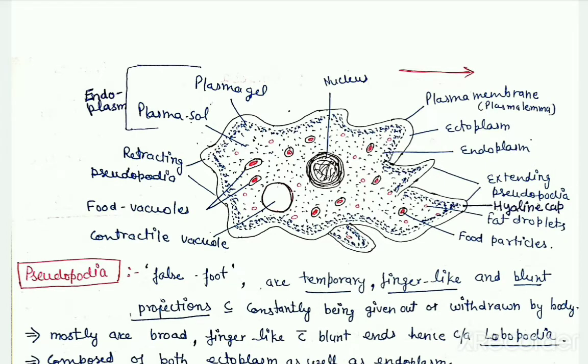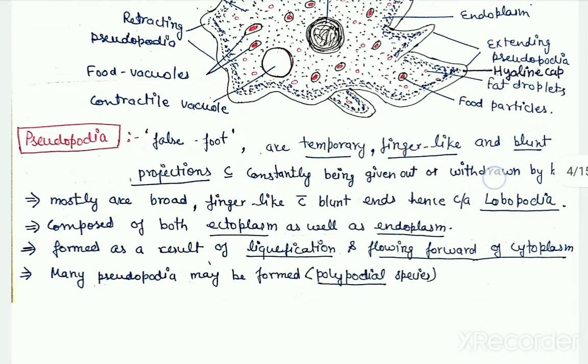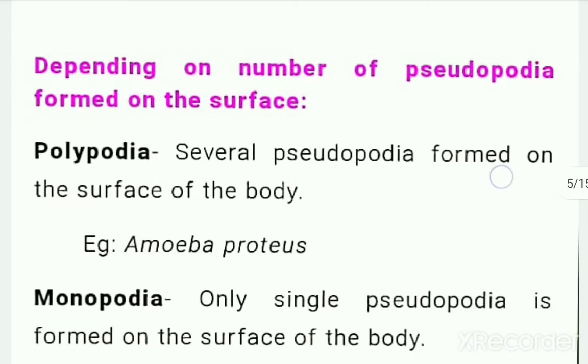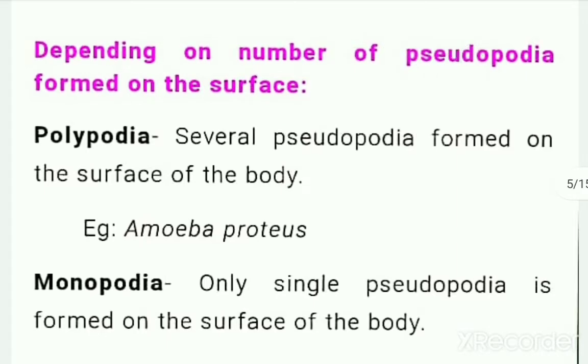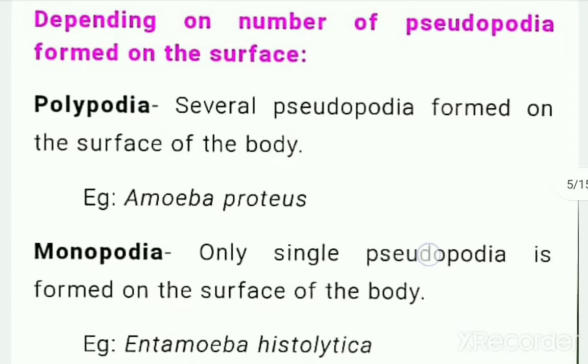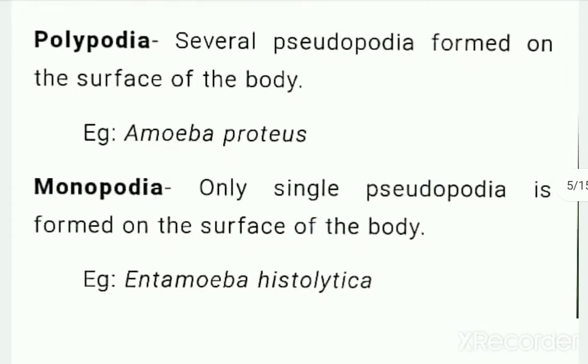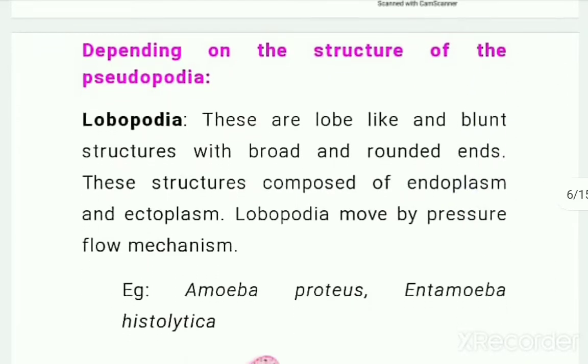Before continuing further with locomotion, let us first take a look at the different types of pseudopodia present in other protozoans. First classification is on the basis of the number of pseudopodia present on the surface. First are polypodia, which means many pseudopodia are present, and second is monopodia, which means at a time only single pseudopodium can be formed.